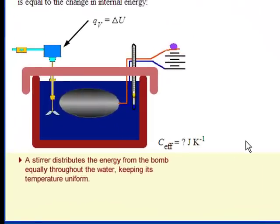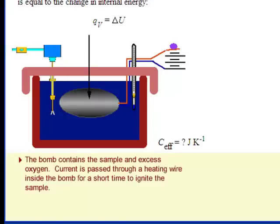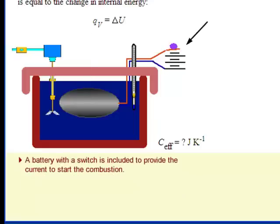The stirrer spreads the heat from the bomb equally around the apparatus. The bomb contains the sample at fixed volume in excess oxygen. A small burst of electrical heat causes the sample to start to burn. We ignore the heat from this initiating heating wire. The battery has a switch which is turned on only long enough to initiate the burning.